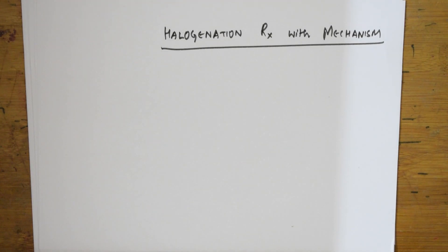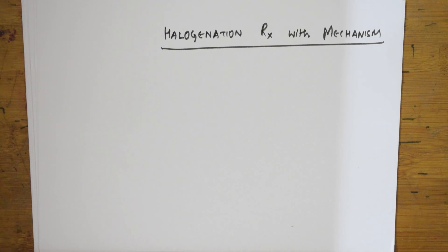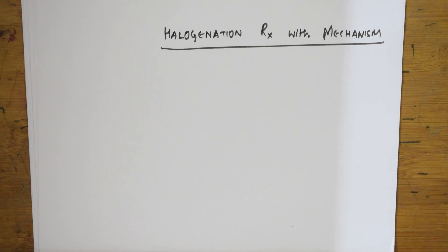Welcome back students to one more electrophilic substitution reaction. In the previous video I taught the complete mechanism of electrophilic substitution. I also showed you what happens when an electron releasing group is present and what happens when an electron withdrawing group is present. Electron releasing groups work with the concept of hyperconjugation, and electron withdrawing groups show the minus M effect as well as minus I effect.